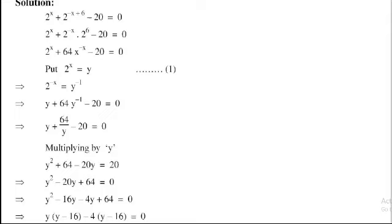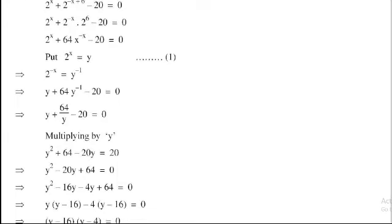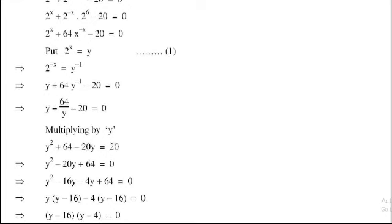Take common y from first two terms, that is y into y minus 16. Next, common minus 4 into y minus 16 is equal to 0. So, y minus 16 into y minus 4 is equal to 0.